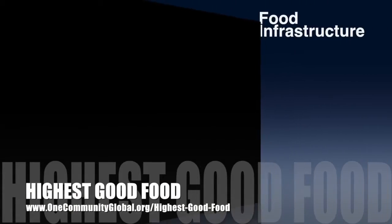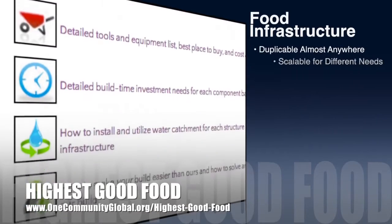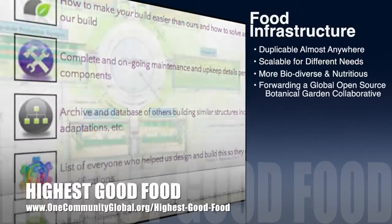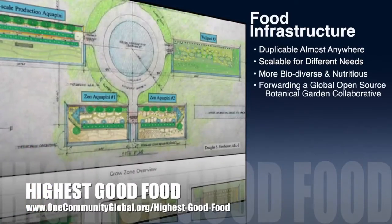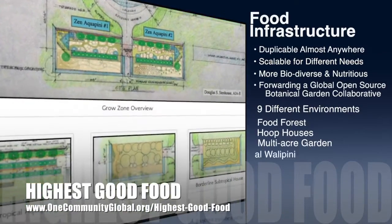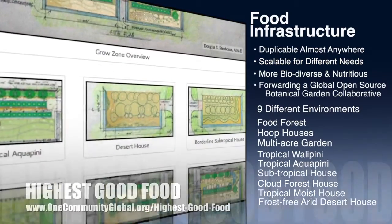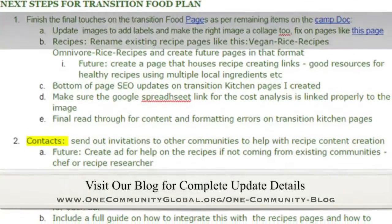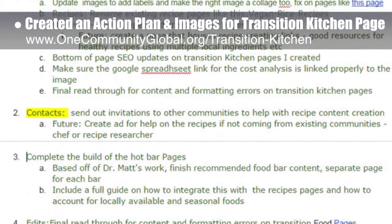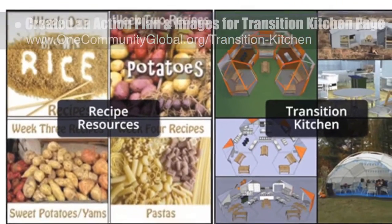OneCommunity's approach to highest good food is duplicable almost anywhere, scalable for different needs, more biodiverse and nutritious, part of forwarding a global open-source botanical garden collaborative, and includes nine different free-shared and duplicable growing environments. This last week, the core team created an action plan and images for our transition kitchen page. You can see images of that work here.